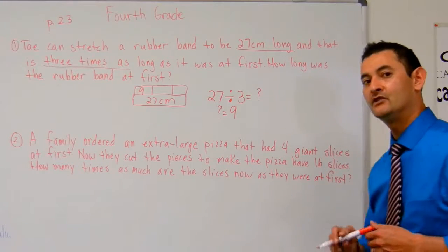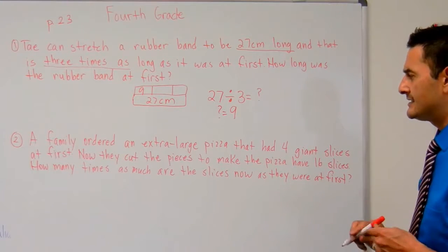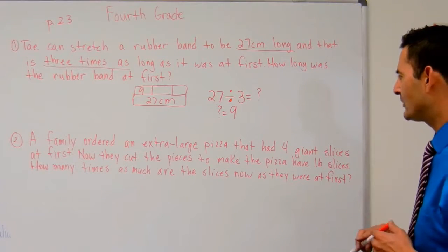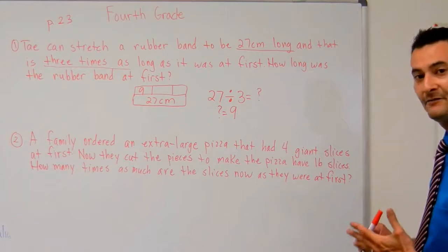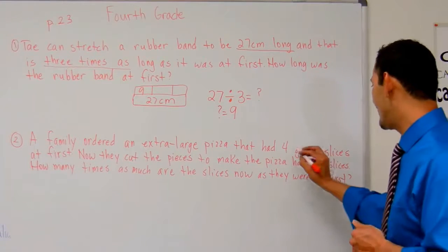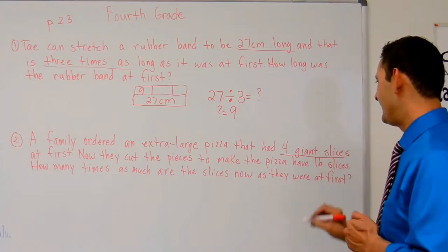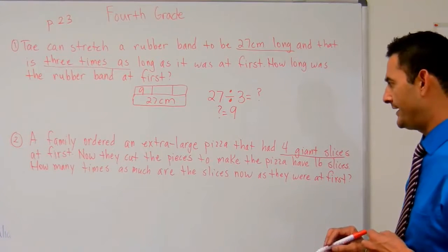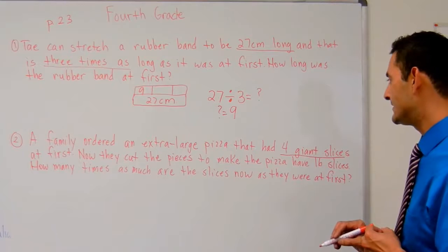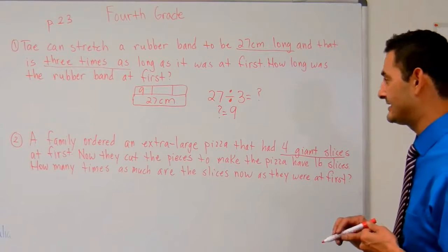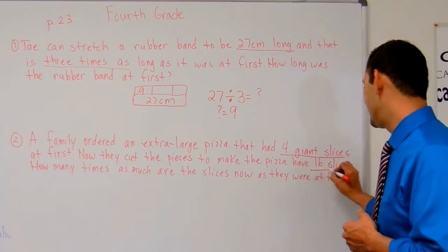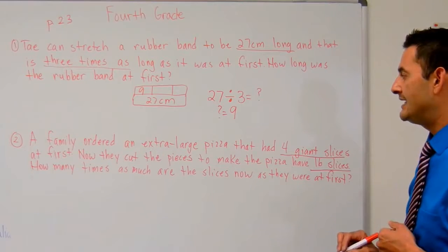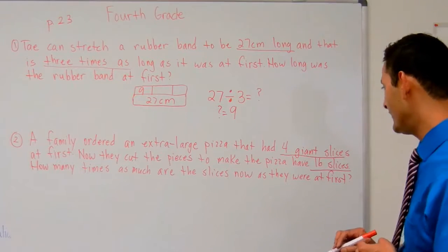Now let's take a look at number 2. A family ordered an extra large pizza - wow, yummy, that's making me hungry, I love pizza. They had 4 giant slices at first. Now they cut the pieces to make the pizza have 16 slices. How many times as much are the slices now as they were at first?